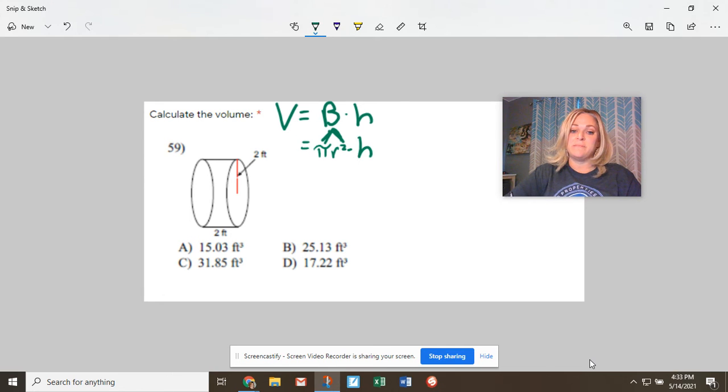And then you're going to multiply times the height. So pi, bring it down. Radius is marked right here as 2 feet, so I'm going to write 2 squared, and then my height actually happens to be 2 as well, times 2.